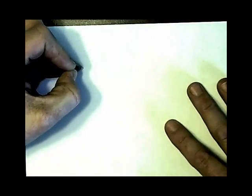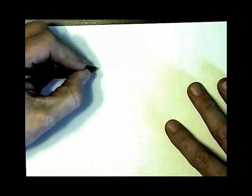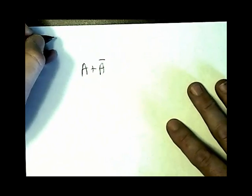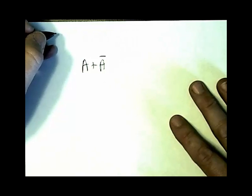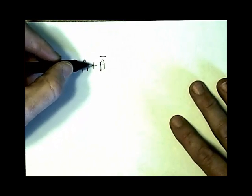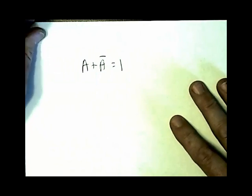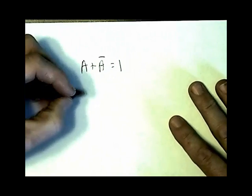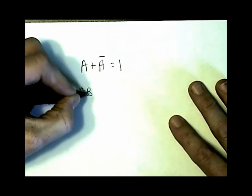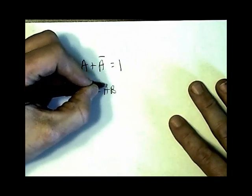First of all, I'm going to start out with one rule that we all should just get ready to recognize. We say that A plus not A, one letter plus its opposite, is always equal to one.